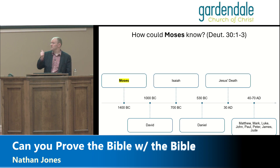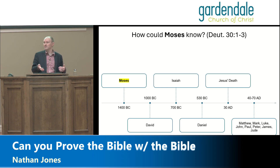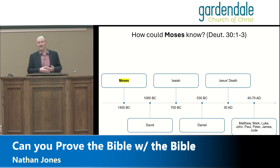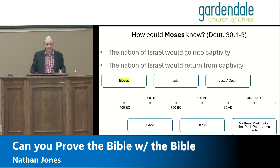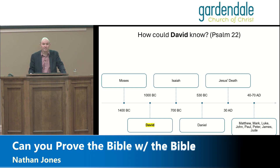Moses is writing around 1400 BC. The captivity — when Babylon starts taking over — comes closer to 600 BC. Moses is talking about something 800 years later, speaking with confidence before the nation is even established. He says they're going into captivity and God will bring them back, which happens around 530 BC. How could he know this? If you were a leader of a nation, why would you say something like that? To me, this is a little crumb: he knew stuff a regular person wouldn't have known.